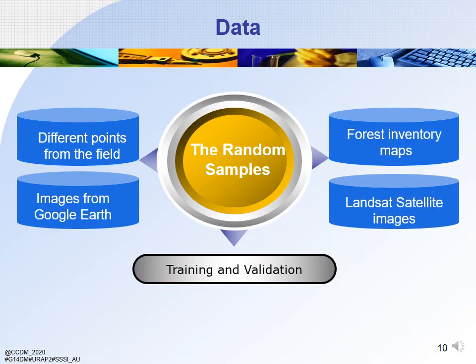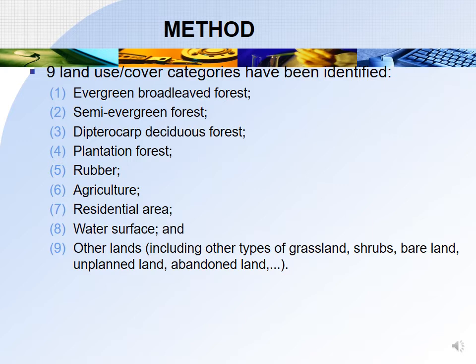For this research, we collected random samples from four sources: reference points from Google Earth imagery, forest inventory maps, and Landsat satellite images for training and validation. Based on the image quality and our purpose, five different classes were used to distinguish land cover in this area: evergreen broad-leaved forest, semi-evergreen forest, degraded open-canopy forest, deciduous forest, plantation forest, rubber, agriculture, residential area, water surface, and other lands including grasslands, shrubs, barelands, unplanned land, abandoned land, and so on.